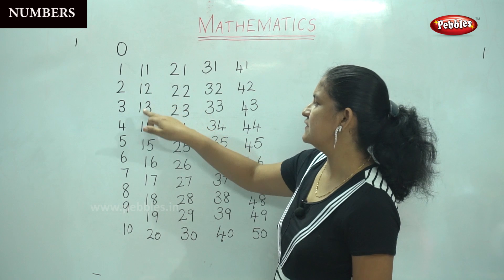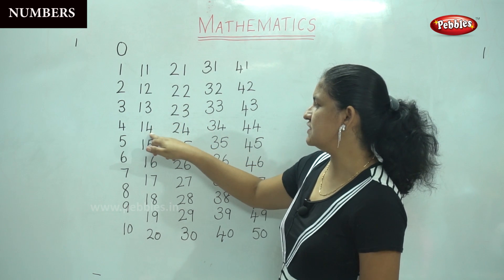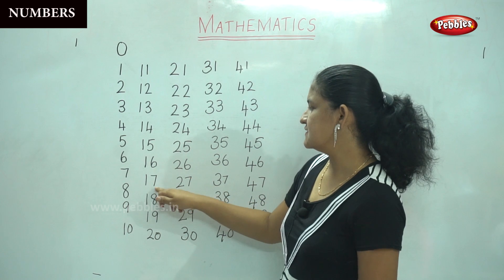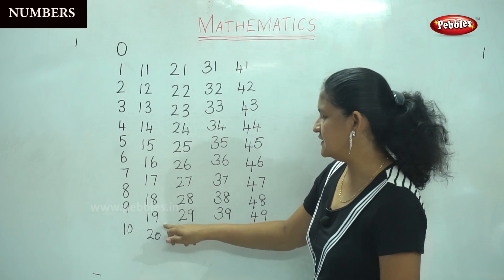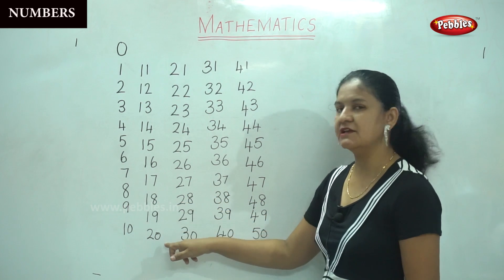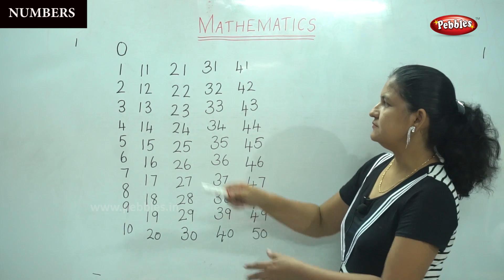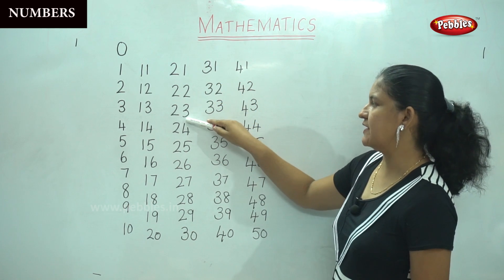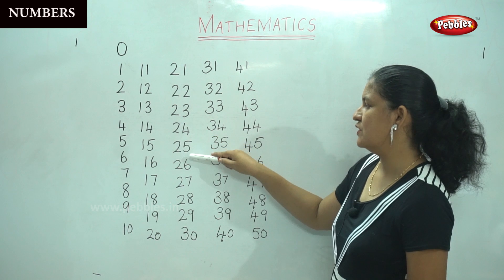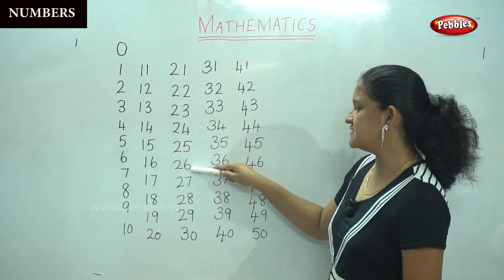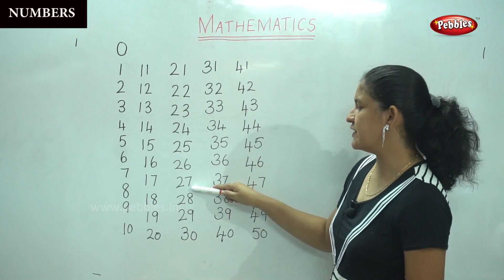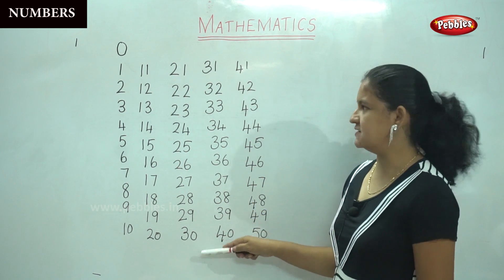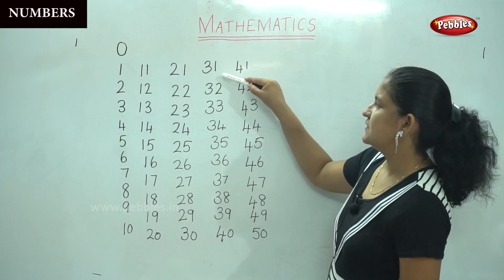12, 13, 14, 15, 16, 17, 18, 19, 20, 21, 22, 23, 24, 25, 26, 27, 28, 29, 30, 31.